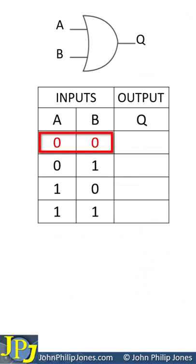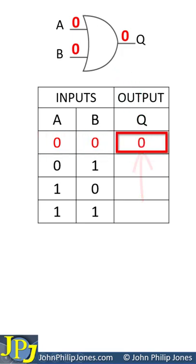I will now highlight the inputs A and B when they're both 0, and this can be applied to the OR gate, as you can see here. Under these input conditions, the output Q will be a 0, and we will place this 0 in the truth table here.